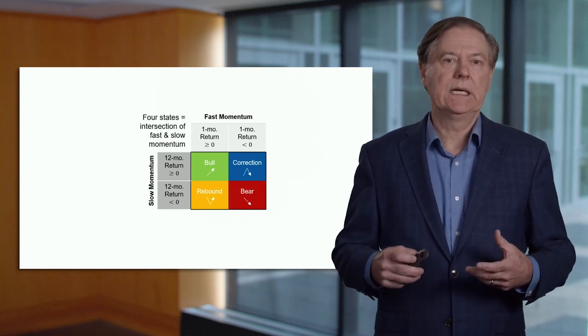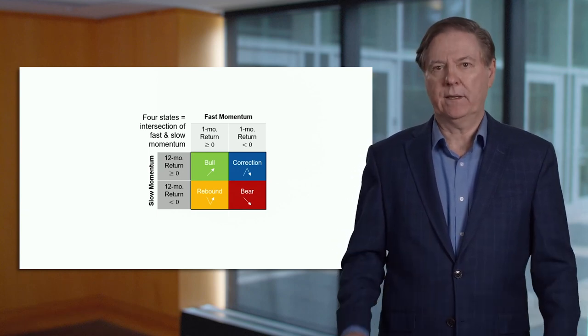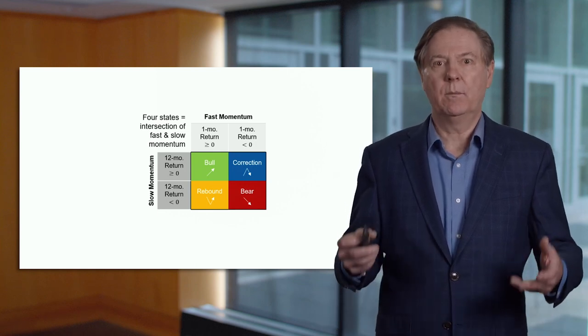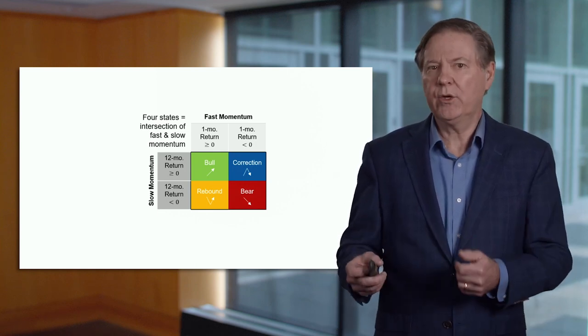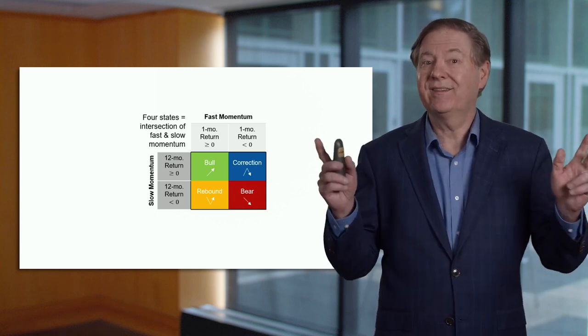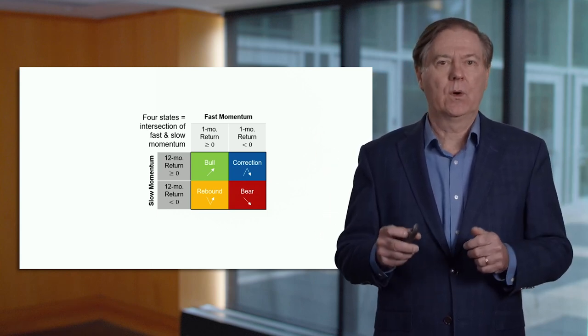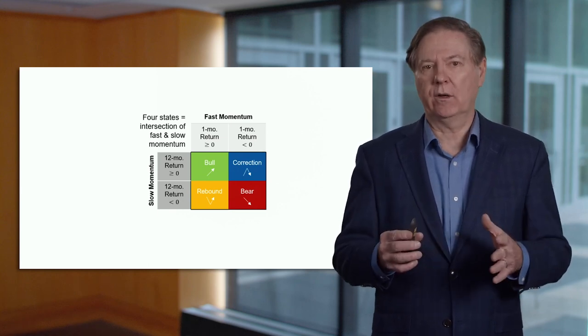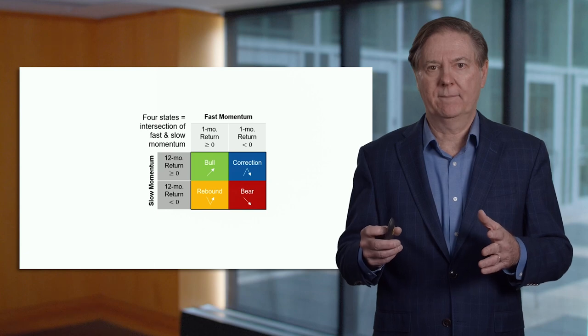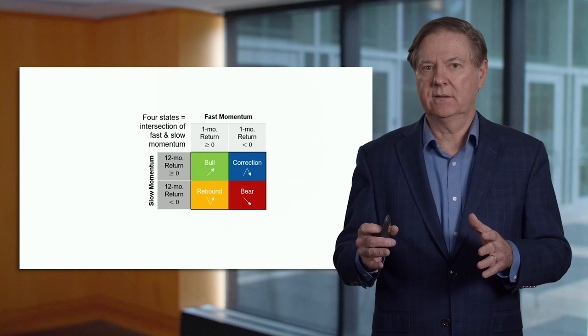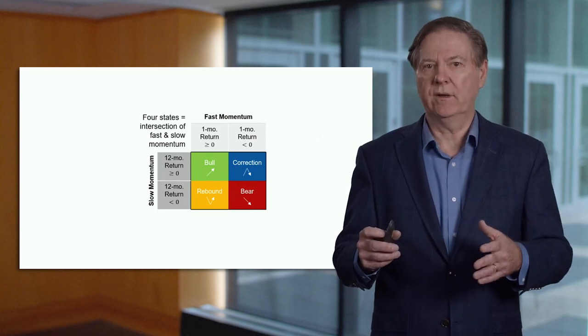Let me start by giving the basic landscape here, and it has to do with the usefulness of momentum. One issue with momentum is that you need to choose a speed. A fast speed means a very short lookback, let's say one month. And when you look at a short lookback, that could be really noisy, so you could get a lot of false signals.